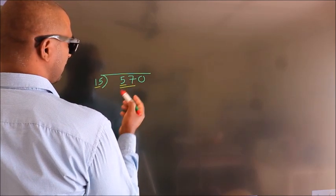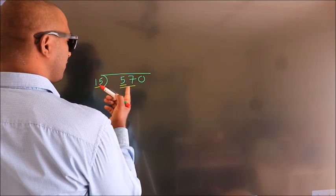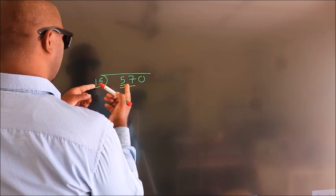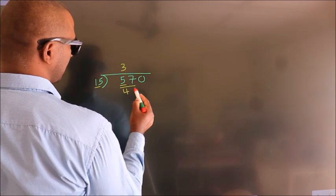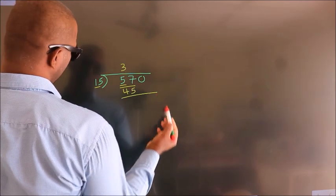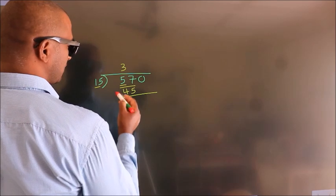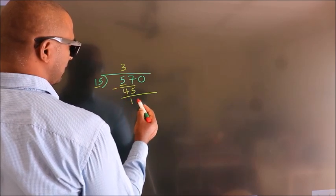57. A number close to 57 in the 15 table is 15 threes, 45. Now we should subtract. We get 12.